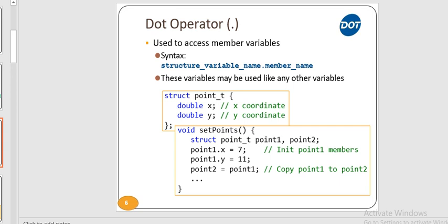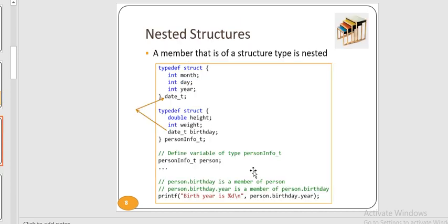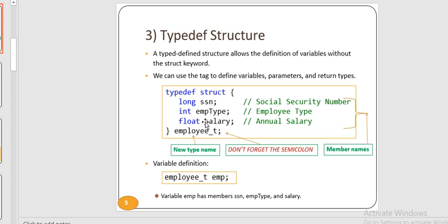Structure members cannot be initialized with the declaration — doing so will fail at compilation because when a data type is declared, no memory is allocated; memory is allocated only when a variable is created. We can initialize structure members in three ways: using the assignment operator (str.member1 = value1), using an initializer list, or using a designated initializer list.